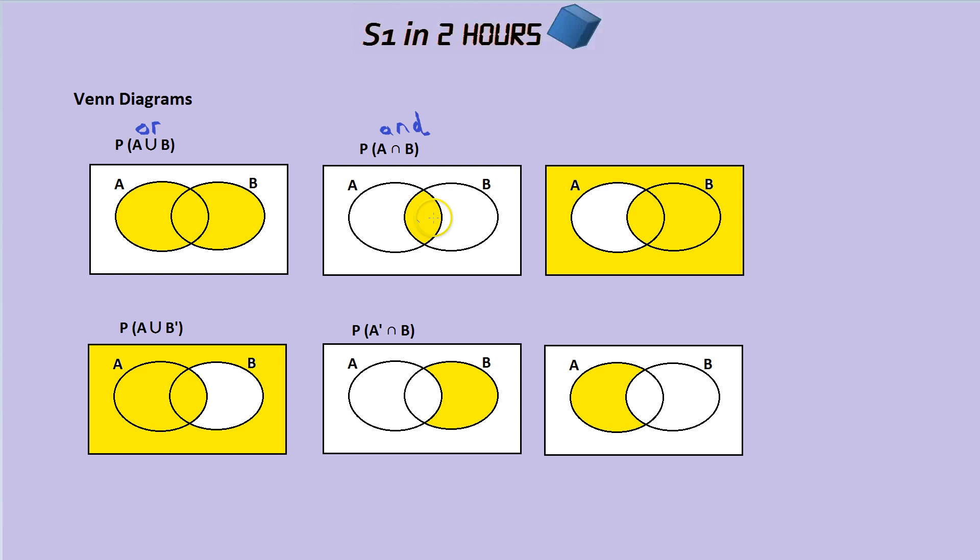The only region on this diagram that has A and B is here. So that's why if you were drawing this on the Venn diagram, you'd fill in this section. You'd look for this probability here. We'll get to a question in a second. Let's do a few more examples.